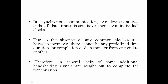In the case of asynchronous communication, two devices have data transmission but each device has its own individual clock — there is no shared clock source. Therefore, there cannot be any predefined time duration for the completion of data transfer. In asynchronous communication, some additional handshaking signals are used to complete the transmission — a request or grant handshaking signal is exchanged so that the data transmission will complete.